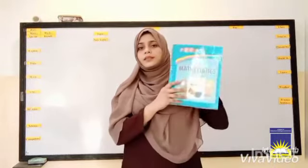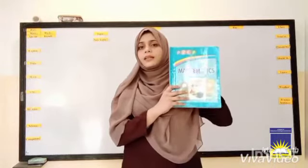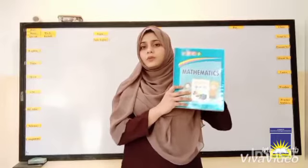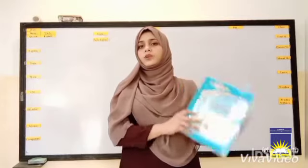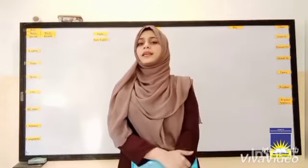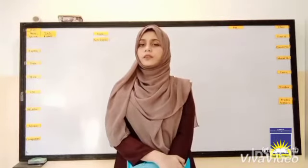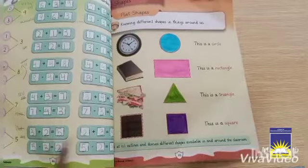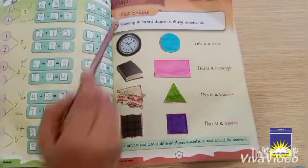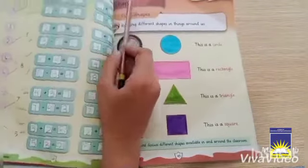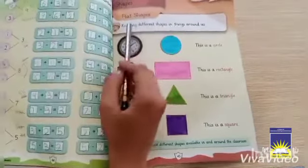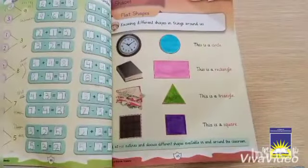Okay children, this is your mathematics workbook, so take out your books and let's open page number 45. Page number 45, part 3: Shapes — flat shapes.